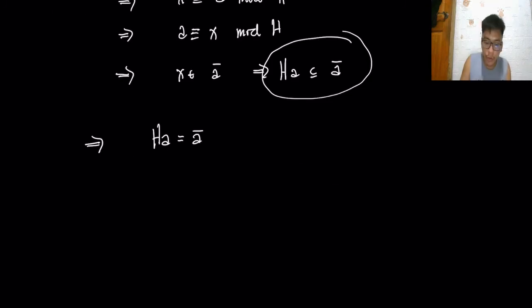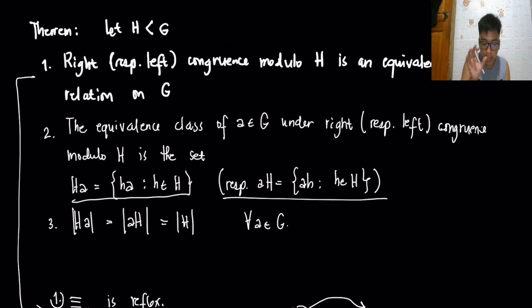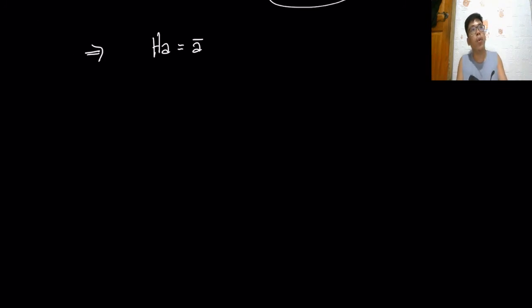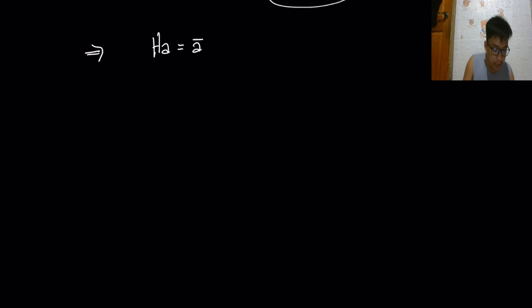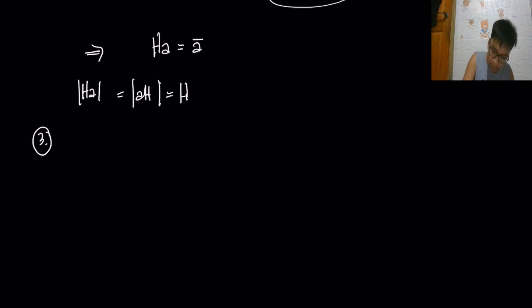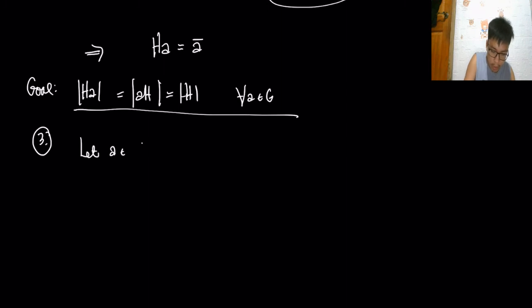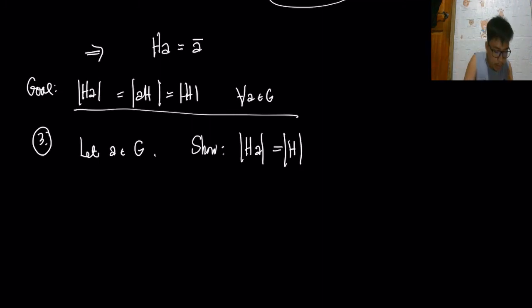For claim three, we show that |Ha| = |aH| = |H| for every a in G. To show these cardinalities are equal, we establish a mapping and show it is a bijection (one-to-one and onto), from which equality of order directly follows. We define a function f from Ha to H, defined by f(ha) = h.